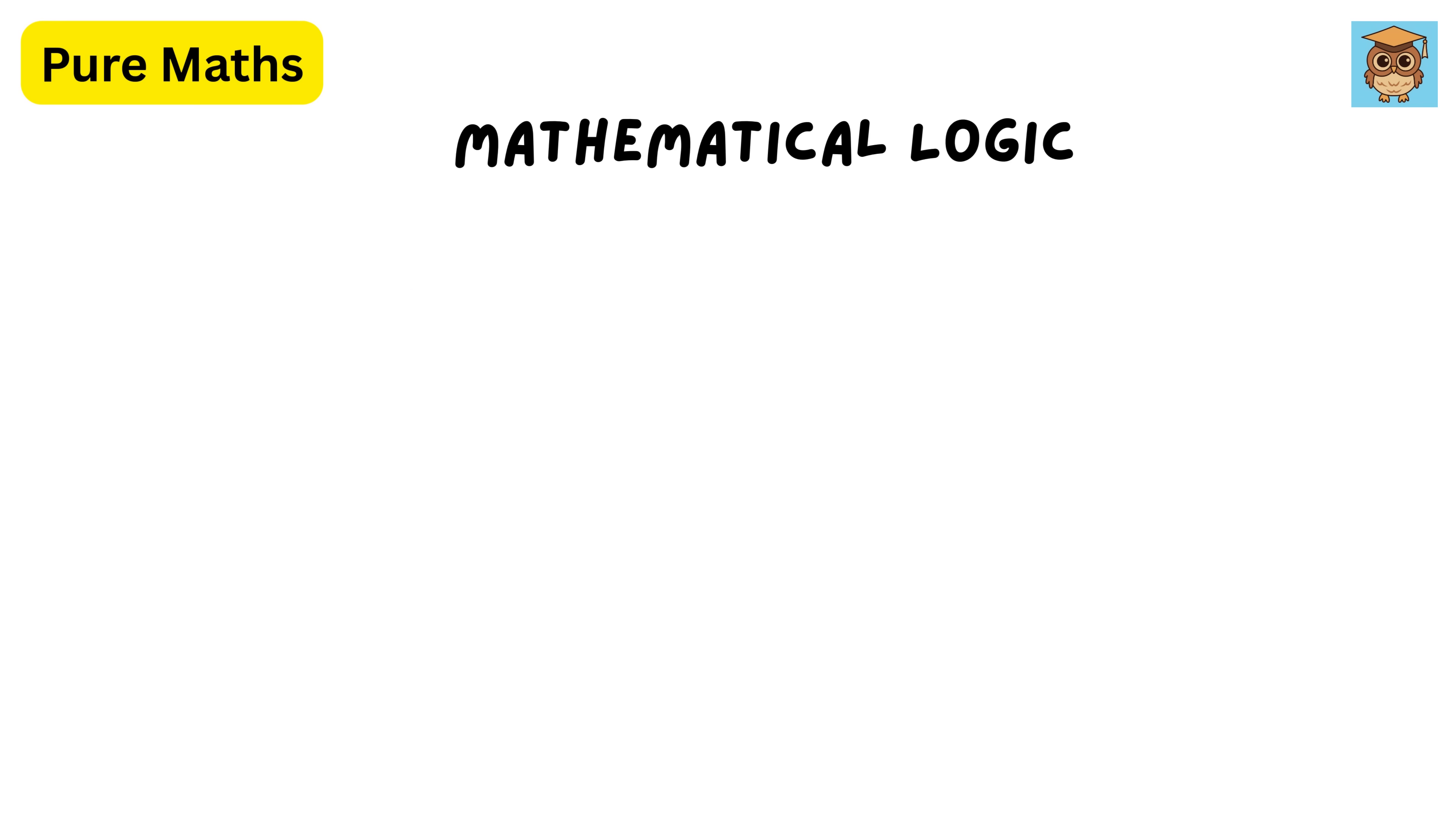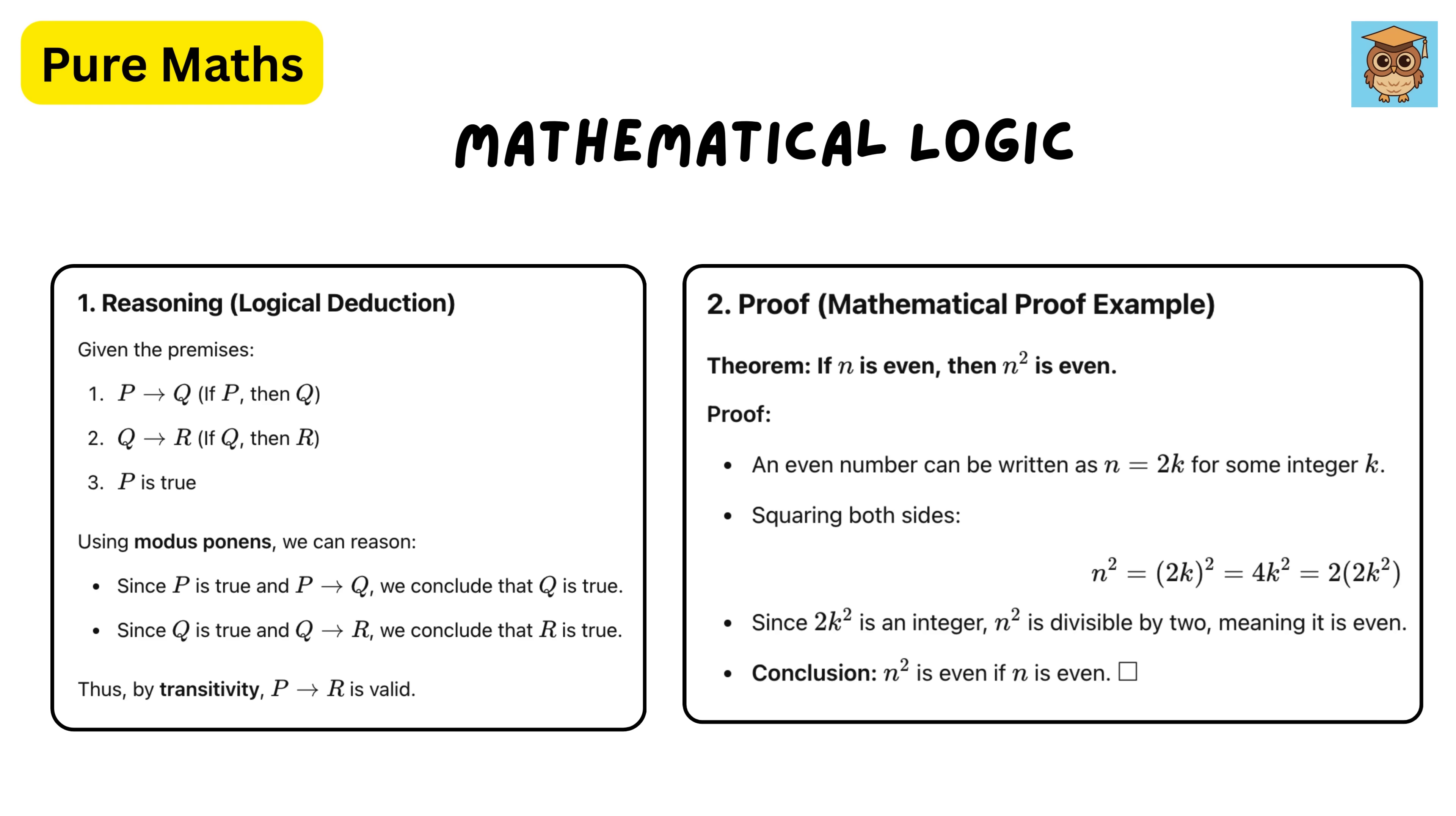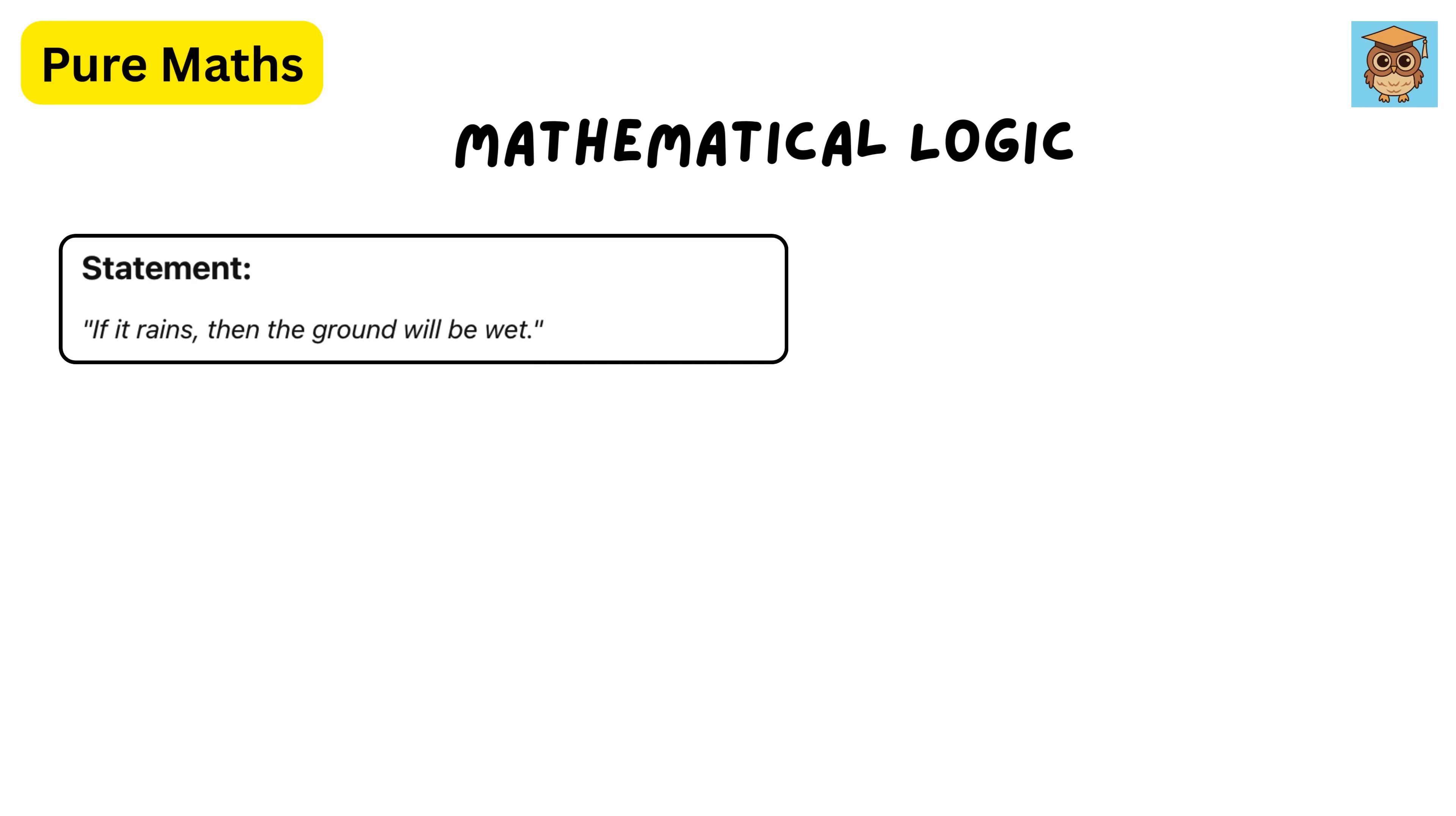Then we have Mathematical Logic. Mathematical logic is the branch of mathematics that studies the foundations of reasoning, proof, and truth using formal systems. It's like the rulebook for how math works, writing arguments down to symbols and structures to make them airtight.